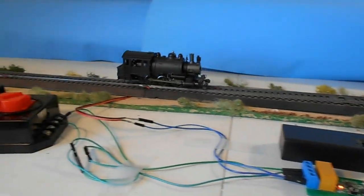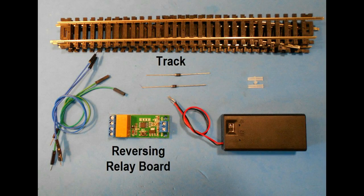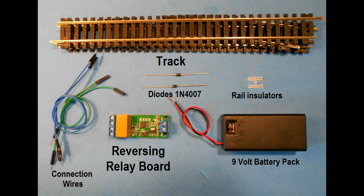Here I am using it in HO scale. The components needed for this project include the track for the point-to-point layout, along with the auto-reversing relay board, insulated joiners, two diodes, connection wires.